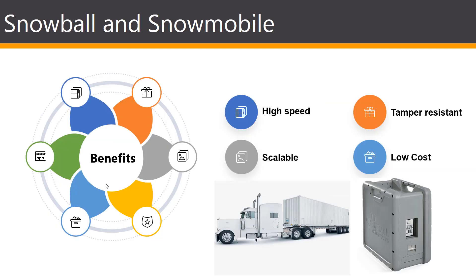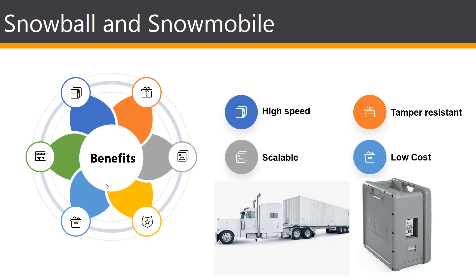Two unique options offered by Amazon are the Snowball and the Snowmobile. The Snowball is a petabyte-scale data transport solution that uses secure appliances to transfer large amounts of data into and out of AWS. Originally, companies mailed physical hard drives to Amazon data centers, which became increasingly cumbersome as AWS grew. So they developed highly secured devices. With Snowball, you simply create a job in the Management Console and the Snowball appliance will automatically be shipped to you.